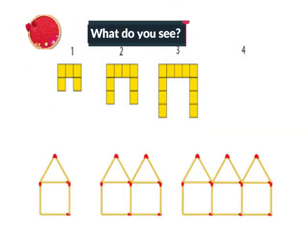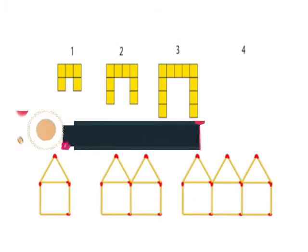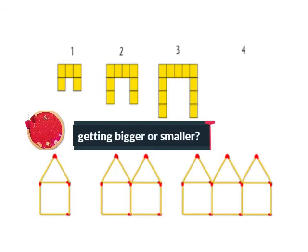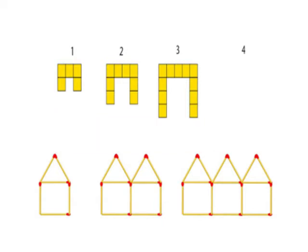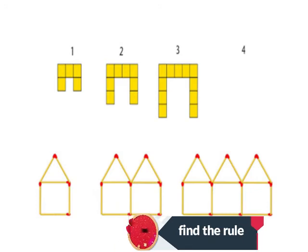Step one is to look at the pattern and describe what you see. What do the shapes and structures look like? Step two is to decide whether the pattern is getting bigger or smaller. Determine the answer by looking at shapes that are either added or removed in each term. The third step is to find the rule for each pattern.